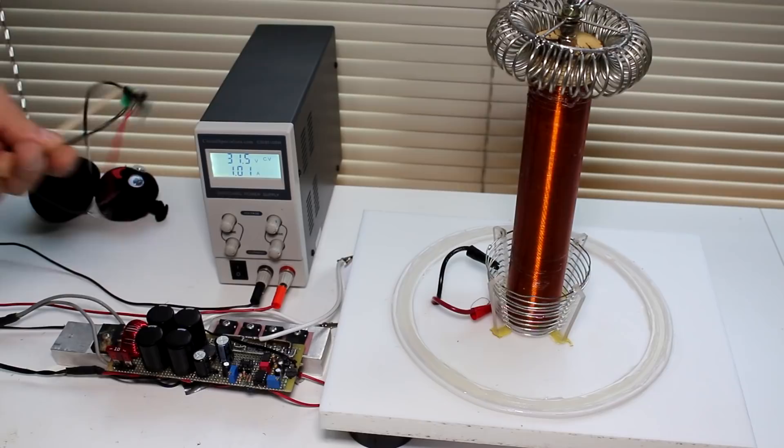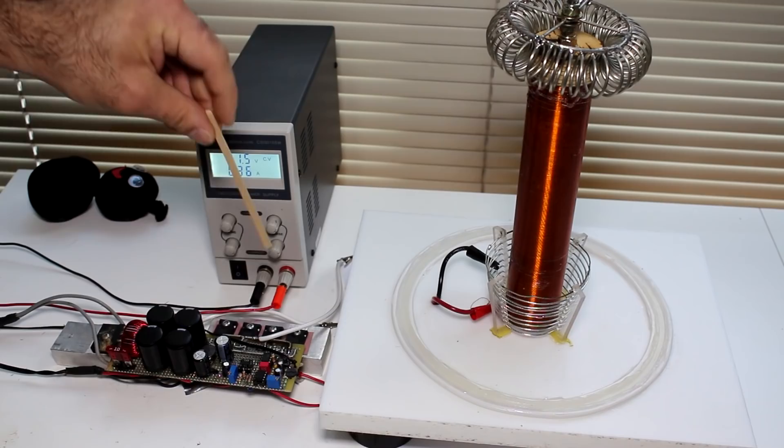As I've mentioned before, you can first use the Slayer exciter circuit to measure the resonance frequency of your tower. Or you can just simply try to adjust the frequency of the circuit.